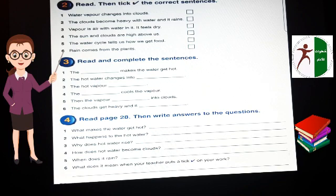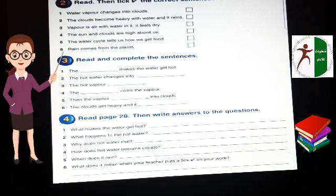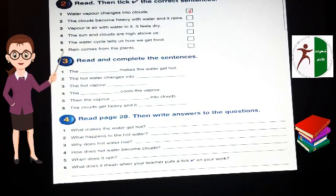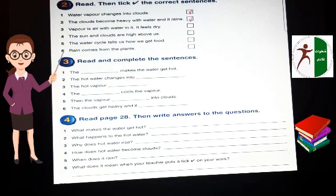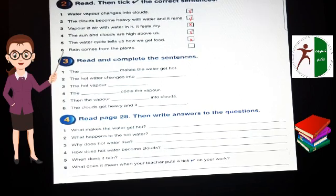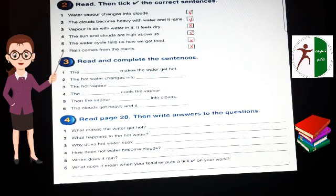Read and tick the correct sentences. Number one. Water vapor changes into clouds. Correct. The clouds become heavy with water and it rains. Also correct. Vapor is air with water in it, it feels dry. Wrong. It feels wet, not dry. The sun and clouds are high above us. Yes, correct. The water cycle tells us how we get food. False. How we get rain, not food. Rain comes from the plants. Of course not. False. Rain doesn't come from the plants, from the sky, from the sea, from the clouds and so on.